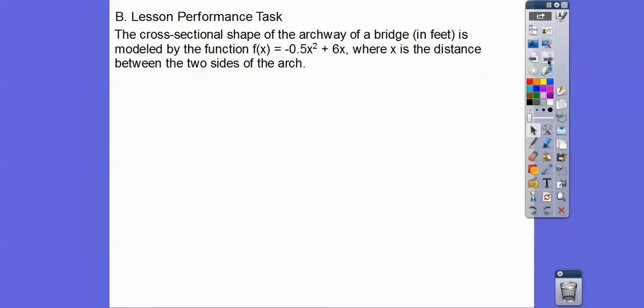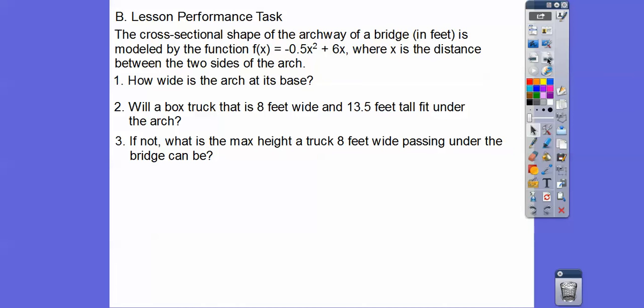Let's try this. The cross-sectional shape of an archway of a bridge in feet is modeled by the function f(x) = -0.5x² + 6x. It's a parabola that opens down because it's negative, where x is the distance between the two sides of the arch. So how wide is the arch at the base? We'll just get the intercepts, you guys.